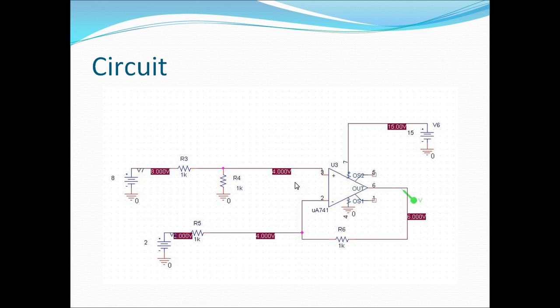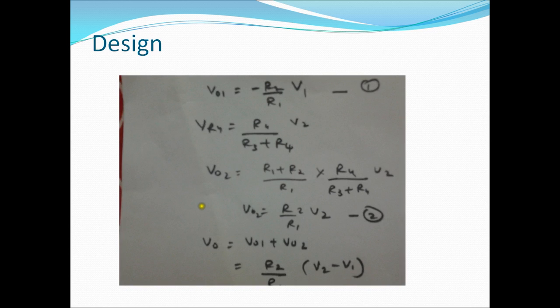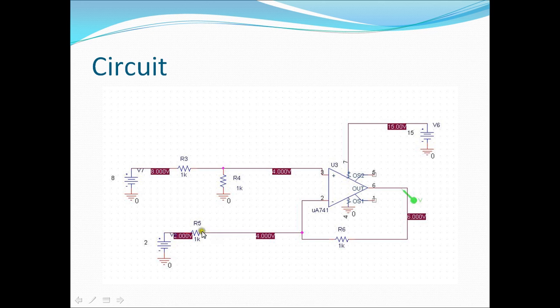So that is what superposition theorem is all about. So we get VO1 is equal to minus R6 upon R5 into V1, so V1 is 2 volts.